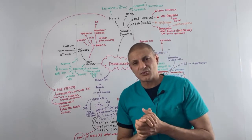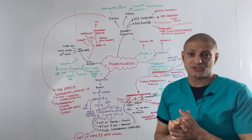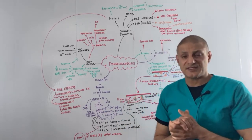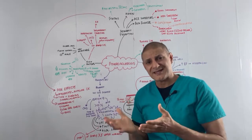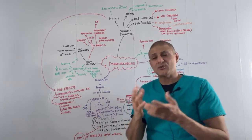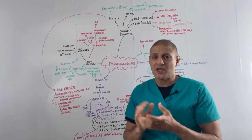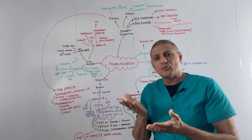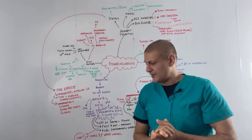When we initiate atorvastatin 20 milligram, we do blood tests at three months and 12 months to check the LFTs, because we can find that statins temporarily increase the ALT and AST levels. We should only be worried and stop the statins when these levels rise to more than three times the upper limit of normal.